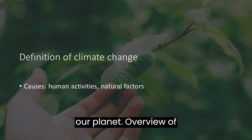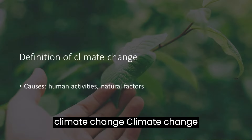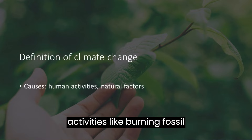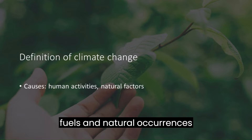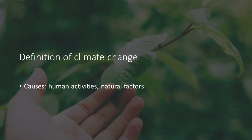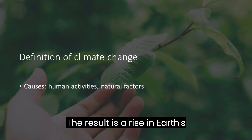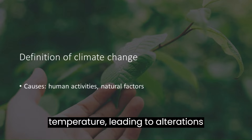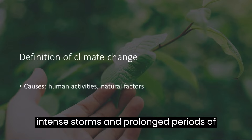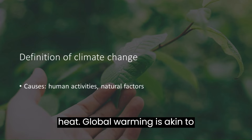Climate change arises from a combination of human activities, like burning fossil fuels, and natural occurrences such as volcanic eruptions. The result is a rise in Earth's temperature, leading to alterations in weather patterns, including more intense storms and prolonged periods of heat.